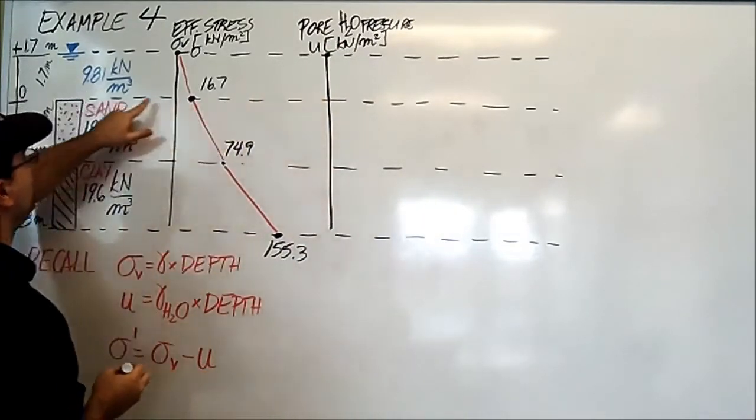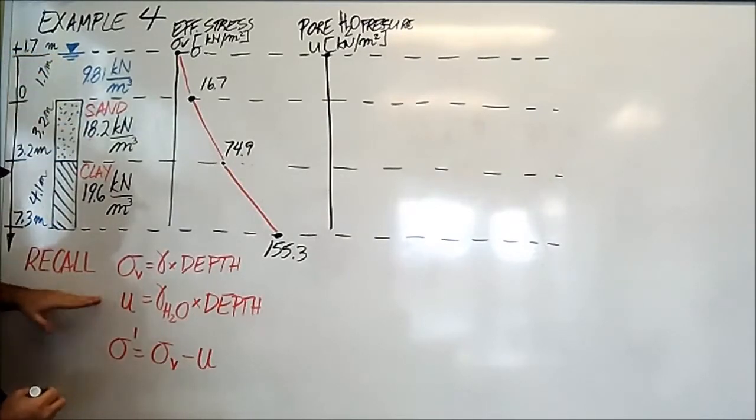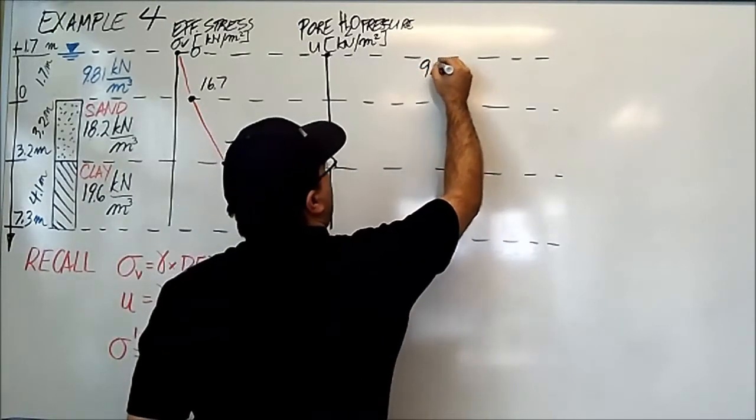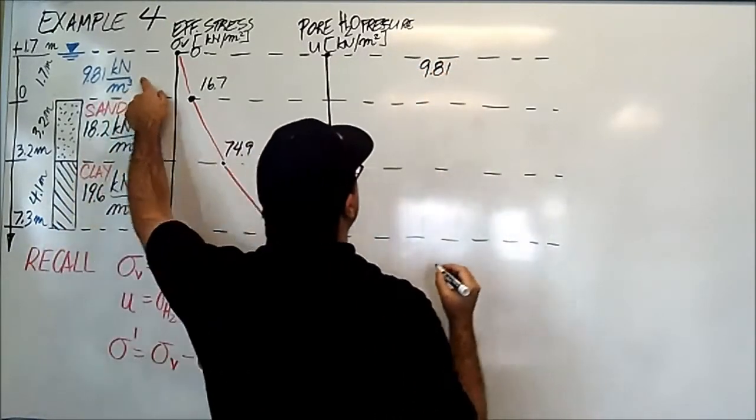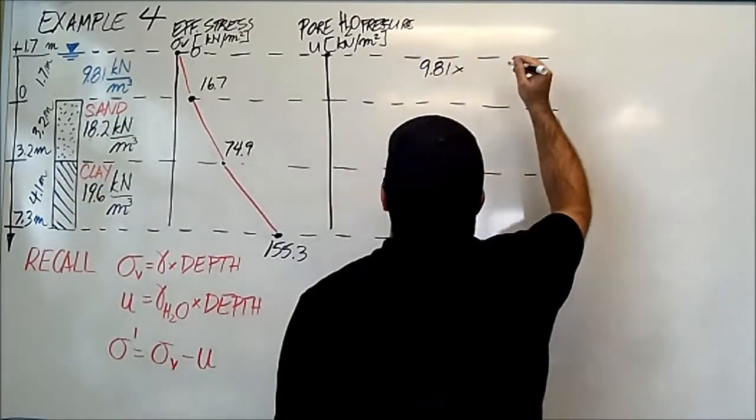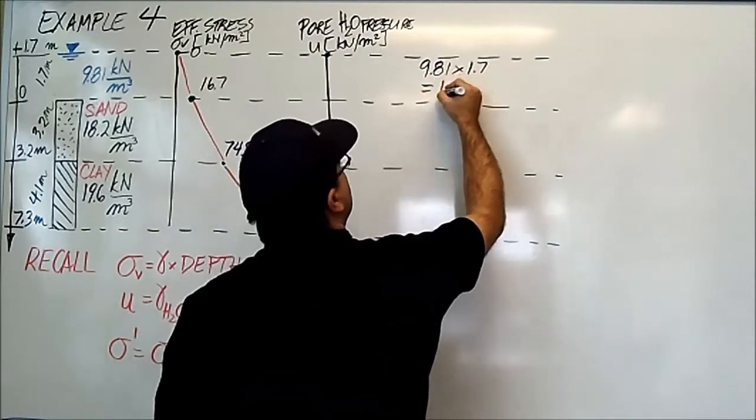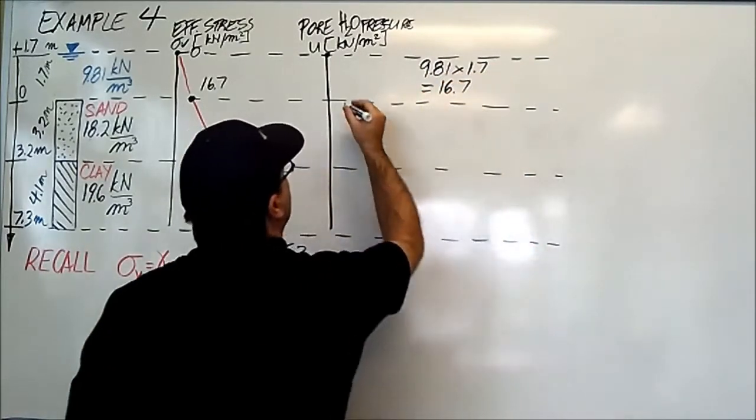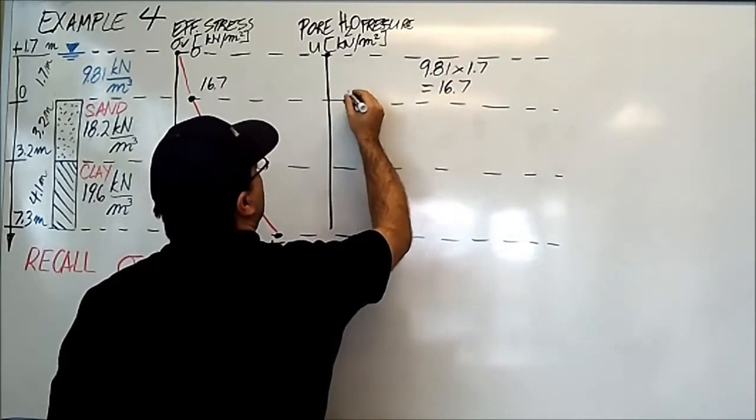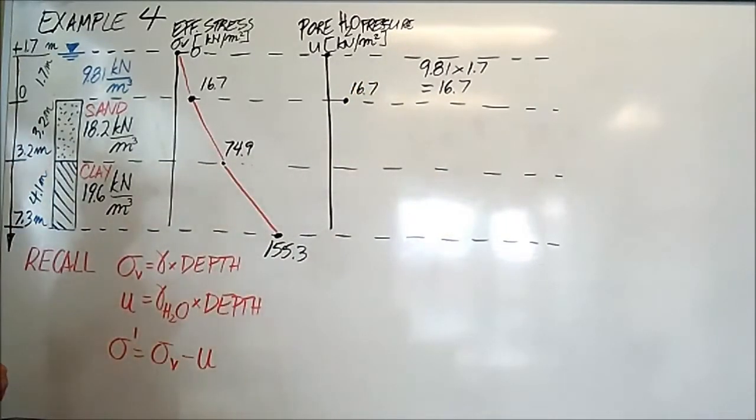At the next interface, here, what is the pore water pressure? We're going to use this formula. It's the density of water, which is 9.81 kilonewtons per meter cubed, times this depth of water above it, which is 1.7 meters. This result is 16.7.